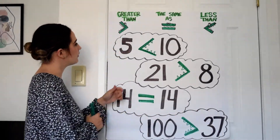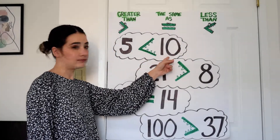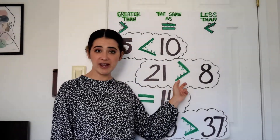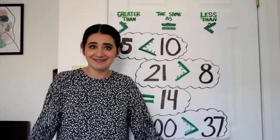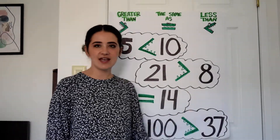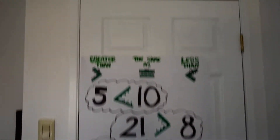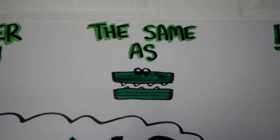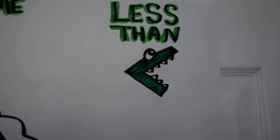Let's check these to make sure they're true. This is my less than symbol — five is less than ten, that's true. This is my greater than symbol — twenty-one is greater than eight, that's true. Fourteen is the same as fourteen. And our last one: one hundred is greater than thirty-seven. I'm going to take the camera up close so you can see our symbols. That's our greater than symbol. This is our equal symbol — it means the same as. This is our less than symbol.